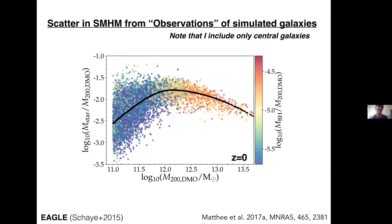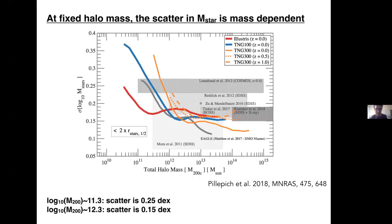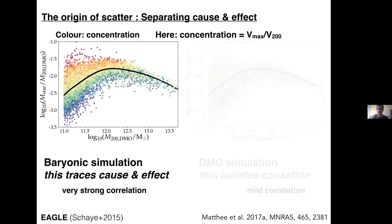In EAGLE, like other simulations such as IllustrisTNG, central galaxies lie on the stellar mass–halo mass relation. As Ben just showed, the scatter at fixed halo mass increases towards lower stellar masses, and EAGLE and IllustrisTNG appear quite consistent — you can compare the blue to the gray line, particularly at lower halo masses. At higher halo masses, the scatter in EAGLE is slightly smaller. About investigating the origin of this scatter: a nice thing about hydrodynamical simulations is that you can try to separate cause from effect.